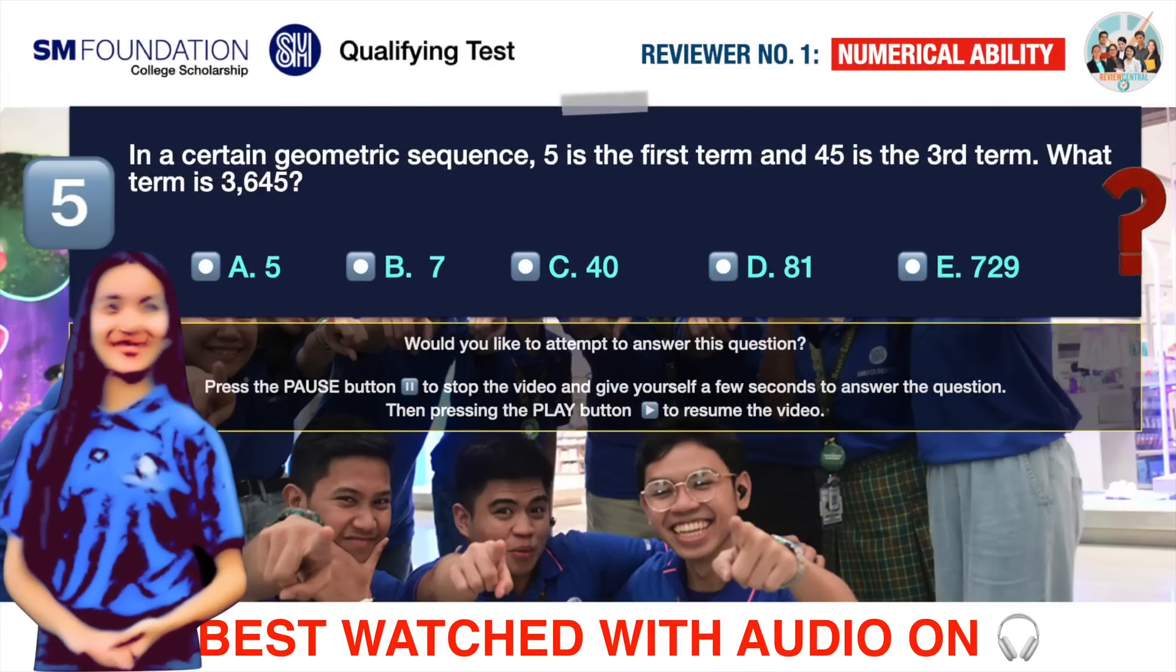Question number five. In a certain geometric sequence, 5 is the first term and 45 is the third term. What term is 3,645? A. 5, B. 7, C. 40, D. 81, E. 729.